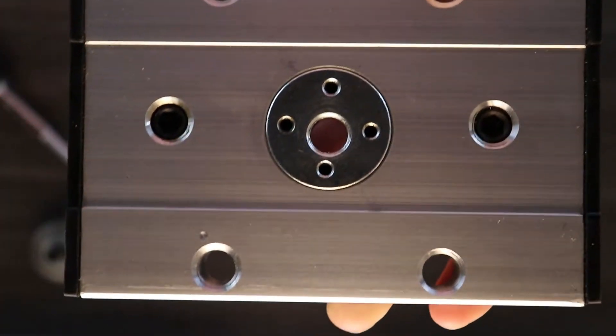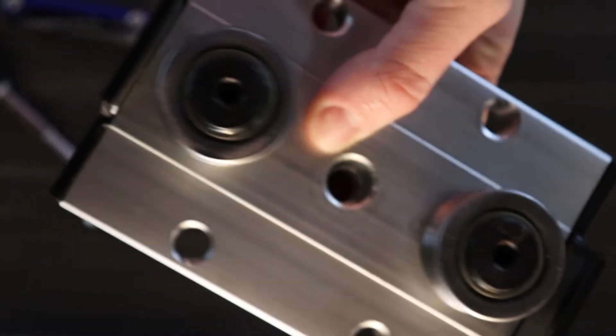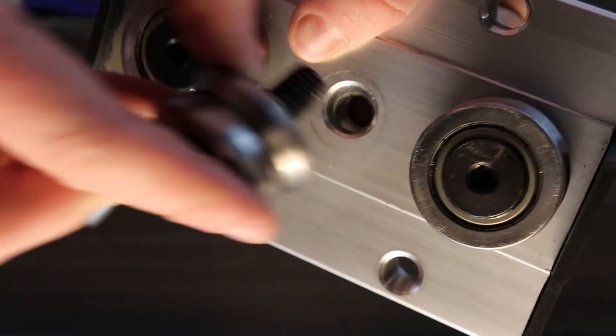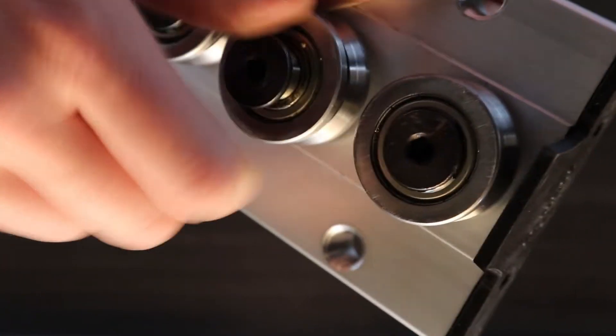Now rotate this off centre disc to the orientation you desire and reassemble everything in the reverse order. That means first securing the large bolt and then tightening the set screws.